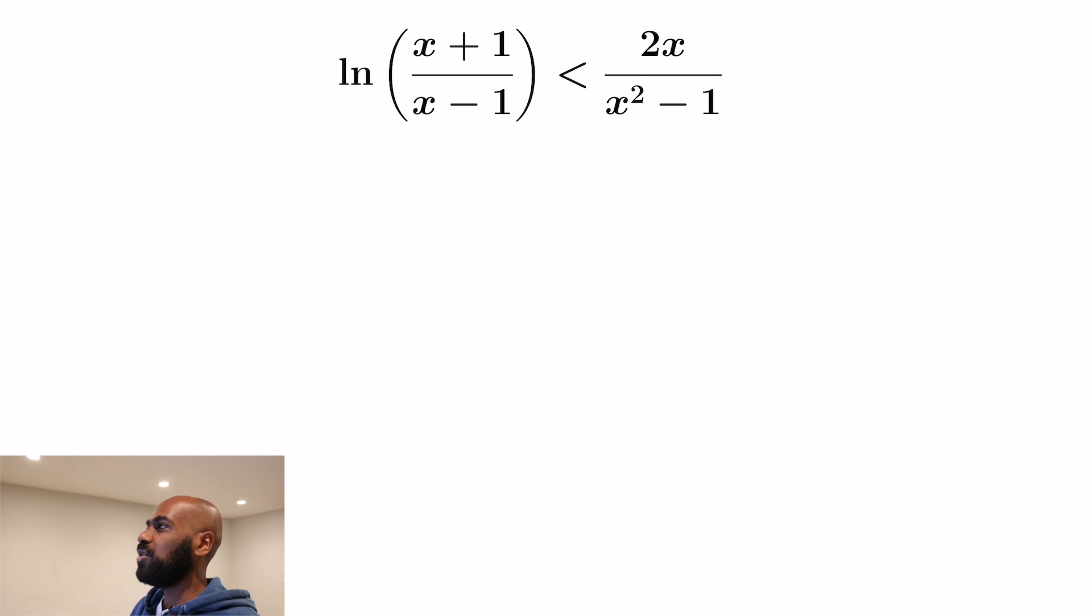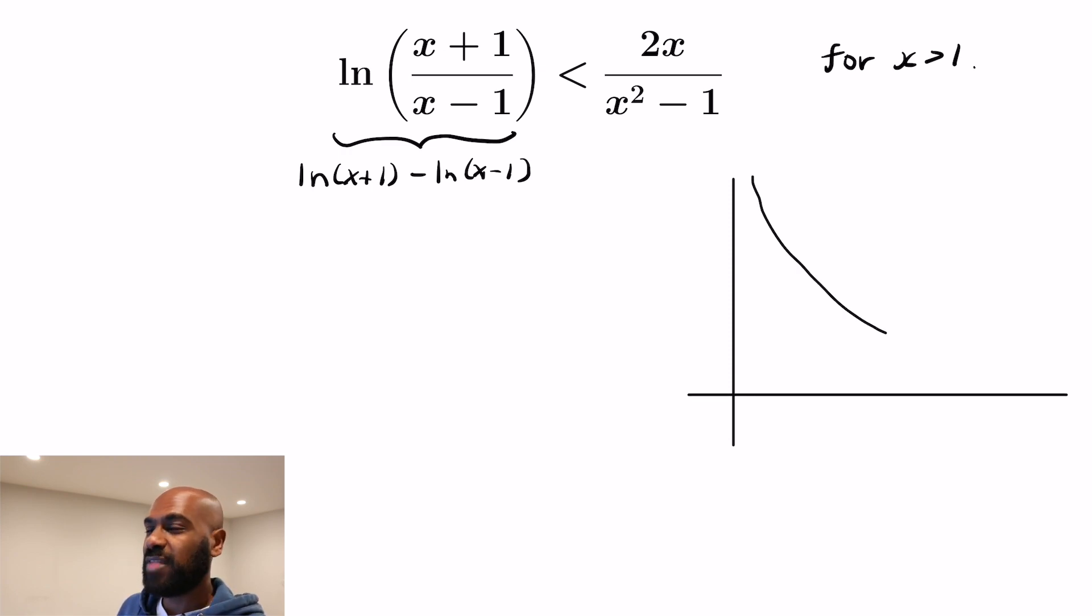So the inequality we're going to look at is the fact that ln((x+1)/(x-1)) is strictly less than 2x/(x²-1) for values of x greater than 1. Now when you're faced with something like this, if you take a look at the left hand side, you can write it as ln(x+1) - ln(x-1). And so you see it as the difference of the evaluation of a function. What you can do is think about taking the derivative of that function and representing that difference as an actual integral.